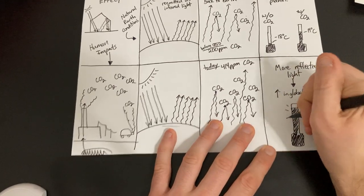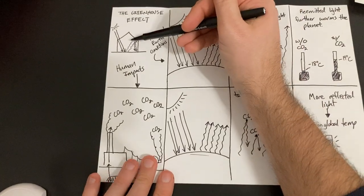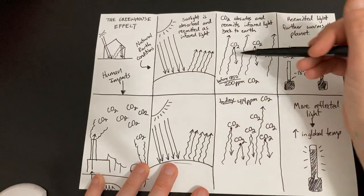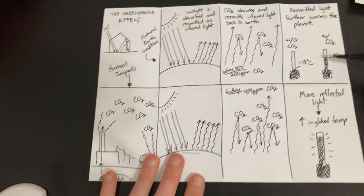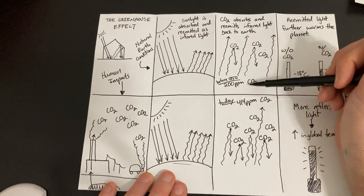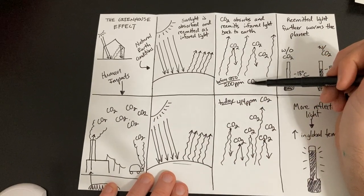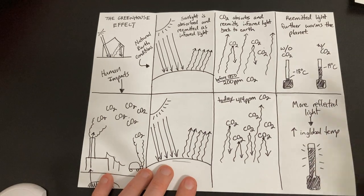So hopefully this does a good job at describing what the greenhouse effect is, how it relates to an actual greenhouse, how it works in natural conditions, and how that's actually really, really good for keeping a warm environment. But the problem is, by essentially doubling the amount of CO2 in just the past 150, 200 years, how that's going to cause the planet to warm. Thanks for watching.